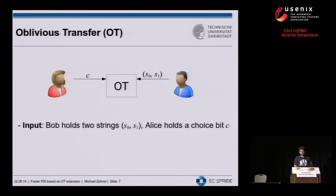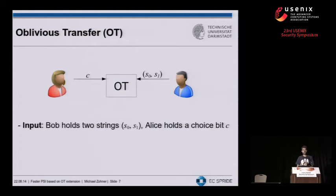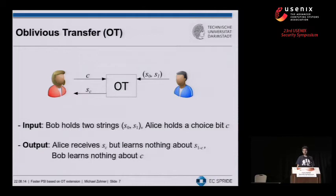To briefly recap what oblivious transfer is: there are two parties, Alice and Bob. Bob holds two strings s0 and s1, and Alice wants to obtain one of these strings. The output is such that Alice learns only the string she queried for, while not learning any information about the other string, and Bob does not learn any information about which string Alice actually chose.